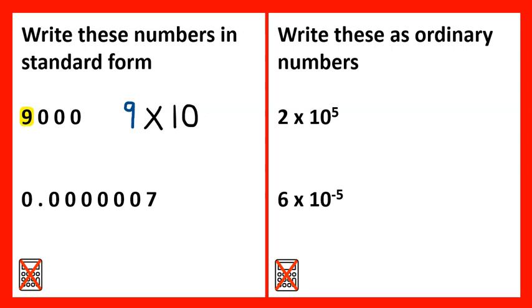So in this example, you can see that the decimal point has been shifted 1, 2, 3 places to end up with 9. So therefore, this would be 9 times 10 to the power of 3.